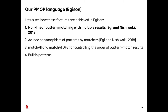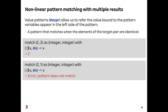First, let me explain non-linear pattern-matching with multiple results. Non-linear patterns are represented using value patterns. Value patterns begin with a sharp sign. A value pattern allows us to refer to the value bound to pattern variables that appear on the left side of the pattern. Here, we demonstrate a pattern that matches when the elements of the target pair are identical. The first expression succeeds because the elements are identical; the second fails because they are different.